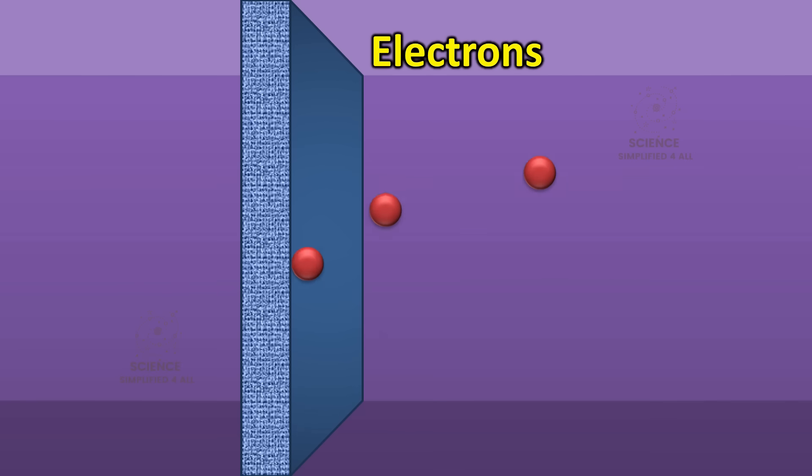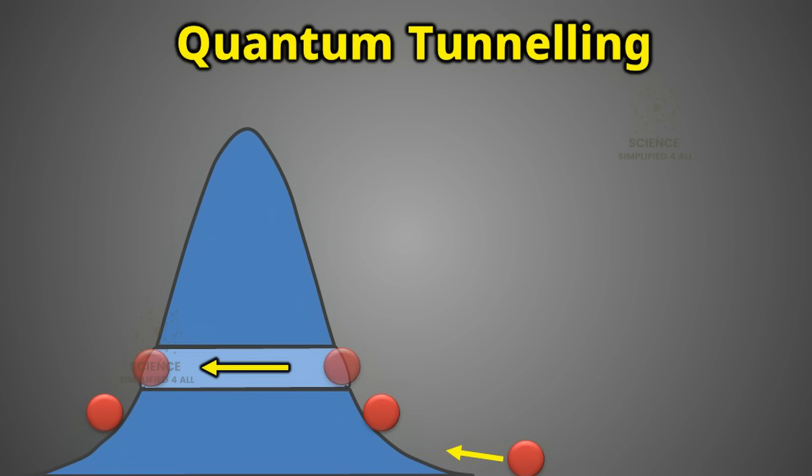Of course, that would never happen to life-scale objects like tennis balls. But in the quantum world, tiny particles such as electrons often pass through barriers that they normally should not be able to cross. This strange phenomenon is known as quantum tunneling.